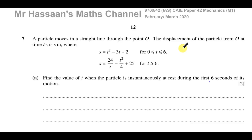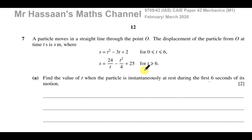This question is about variable acceleration. It is the last question on this paper, and it mentions a particle moving in a straight line through the point O. The displacement of the particle from O at time t seconds is s meters, where s equals t squared minus 3t plus 2 for values of t between 0 and 6. Then the displacement s equals 24 over t minus t squared over 4 plus 25 for values of t greater than or equal to 6. So basically this particle's displacement is described by the first equation for the first 6 seconds of its motion, and then from 6 seconds onwards its displacement is described by this second equation — acting differently in different parts of its domain.